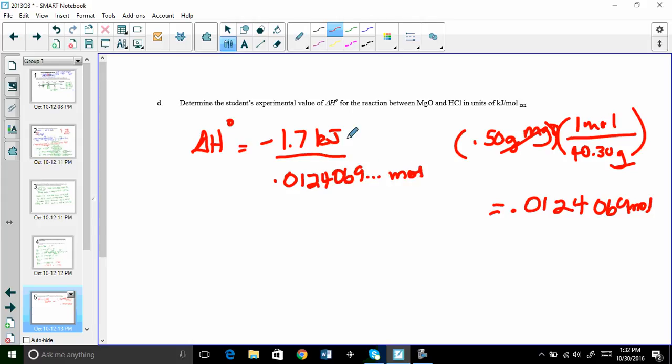I'm going to do that on my calculator, negative 1.7 divided by 0.0124069. I only get two sig figs, and it looks to me like the answer is negative 137.0205289 kilojoules per mole Rxn, but we only get two sig figs, so best answer is negative 140 kilojoules per mole Rxn. Again, I'm still trying to get used to that notation.